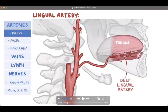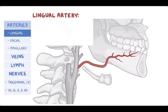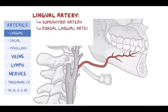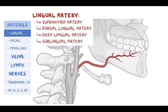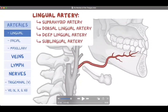The lingual artery then ascends to reach the tongue's inferior surface and continues as the deep lingual artery, which supplies the anterior two-thirds of the tongue. The deep lingual artery is important to remember. Lateral to the frenulum is the deep lingual vein, and more lateral to it is the deep lingual artery. The lingual artery gives off four branches: the suprahyoid artery, dorsal lingual artery, deep lingual artery, and sublingual artery.